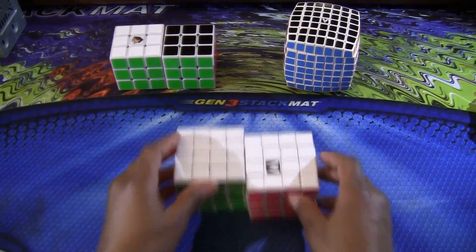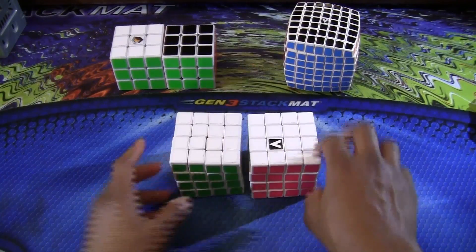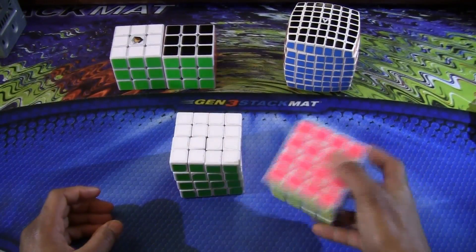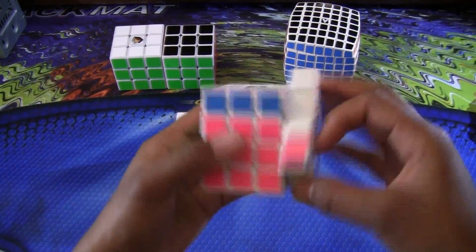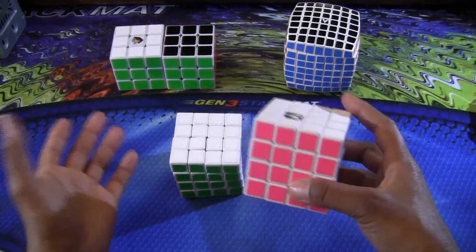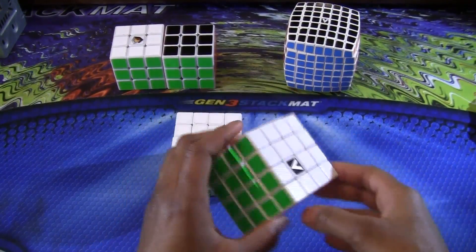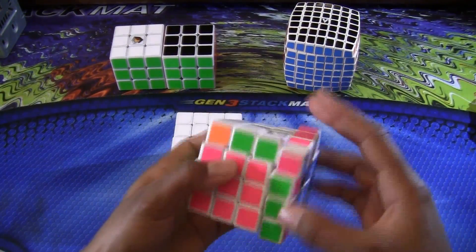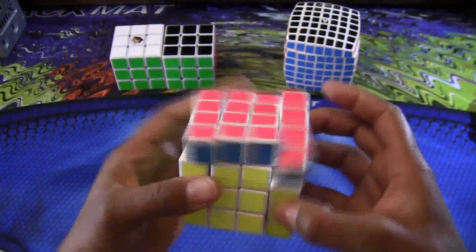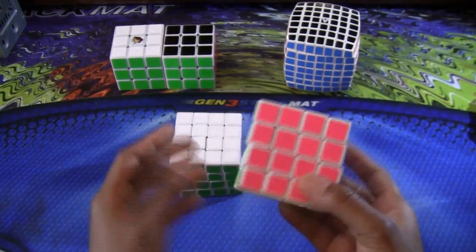Compared to a Shang Shao 4x4, the V-Cube 4x4 outer layer is actually closer to a 3x3. So when you're solving the 4x4, when you get to the outer layers, it's kind of just like solving a 3x3. And the V-Cube is closer to that 3x3 feeling on the outer layers than the Shang Shao 4x4. So that is one plus I really like about the V-Cube.